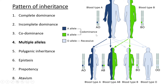The O allele is recessive to both B and A. So if you have the combination AO, it's going to be blood group A because A is dominant. When you have BO, you'll have blood type B because B is dominant. You need two O alleles to actually get blood group O. Two heterozygous individuals for A and B blood group can give four different phenotype combinations: AO gives blood type A, AB gives blood type AB, BO gives blood type B, and OO gives blood type O.